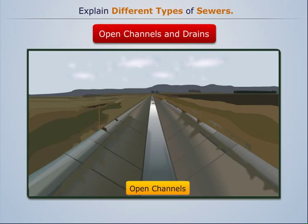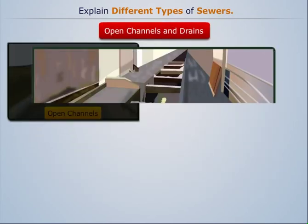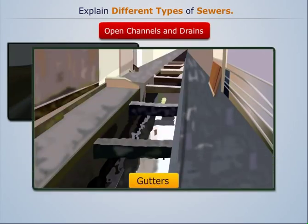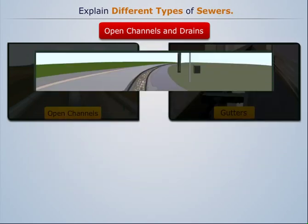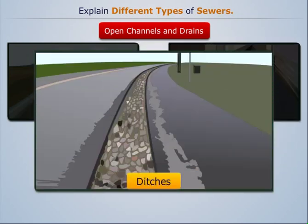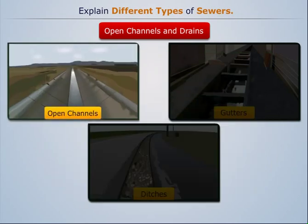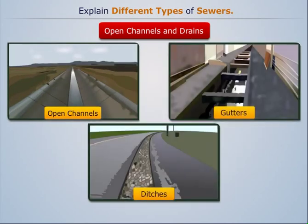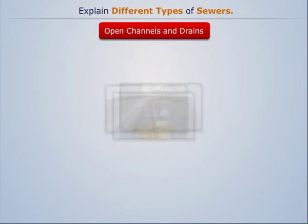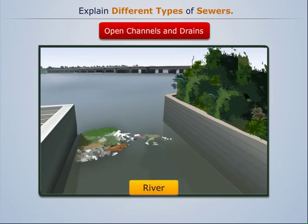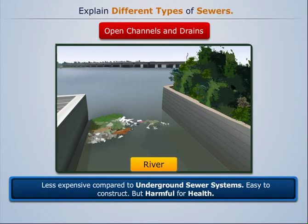An open channel is a conveyance in which water flows with a free surface. The term is generally applied to natural and improved water courses, gutters, ditches, and channels. These small channels and drains take water to a flowing source such as a river.